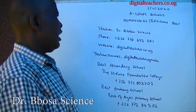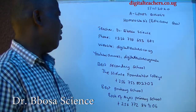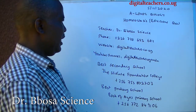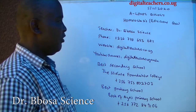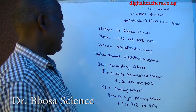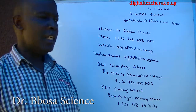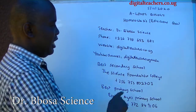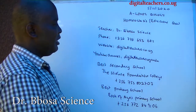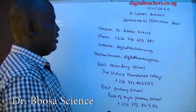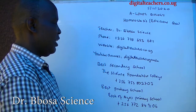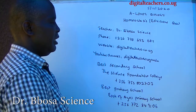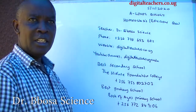Your teacher today is Dr. Bosa Science, phone 256-778-633-682, website digitalteachers.co.ug. Here you find notes, exams, marking guides for physics, chemistry, biology, math, and primary science. YouTube channel: Digital Teachers Uganda.